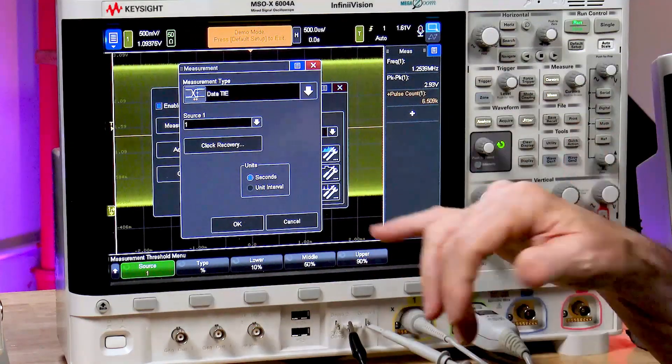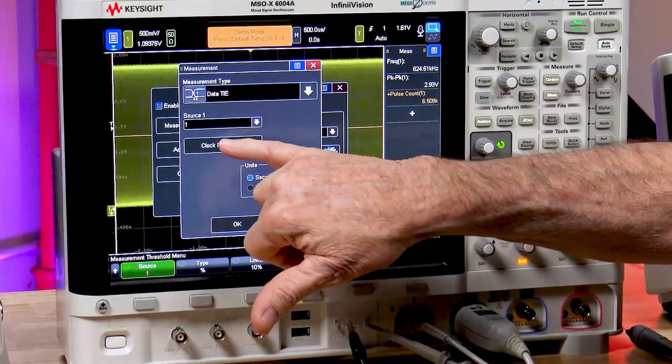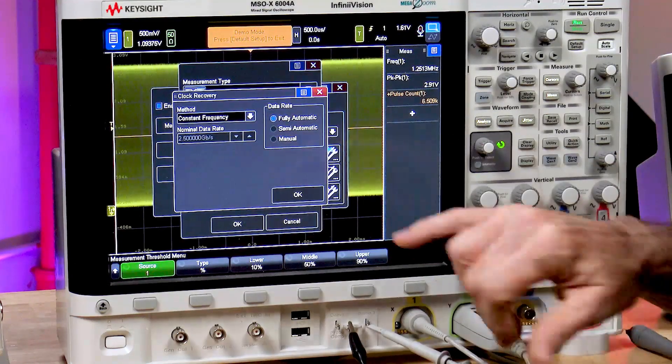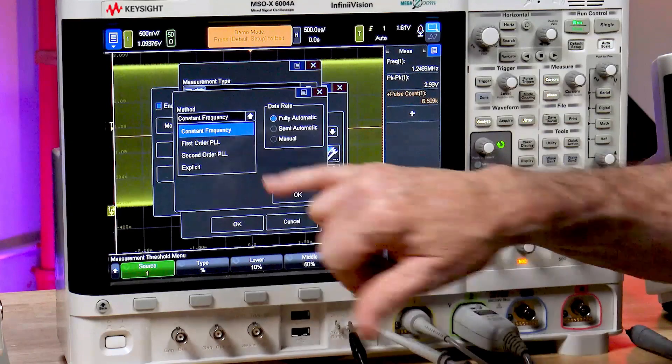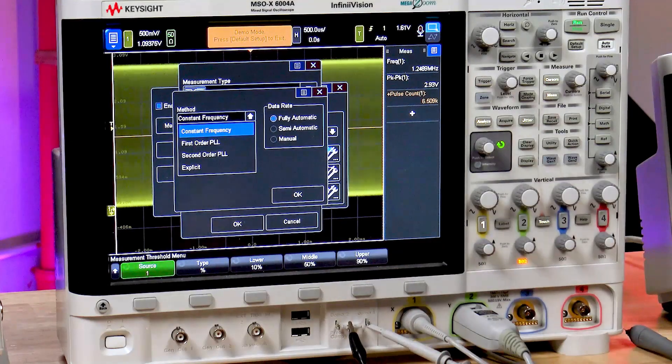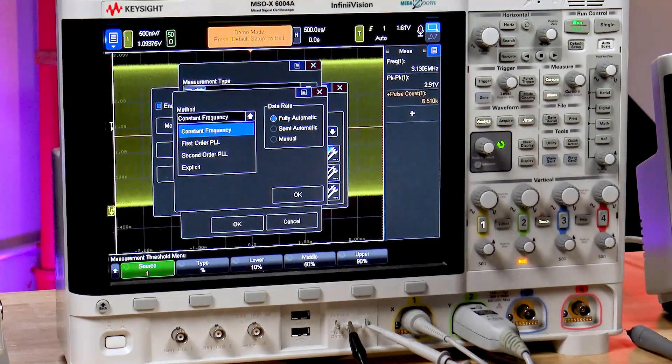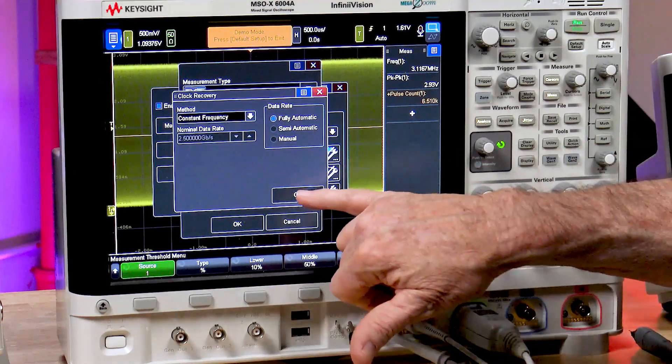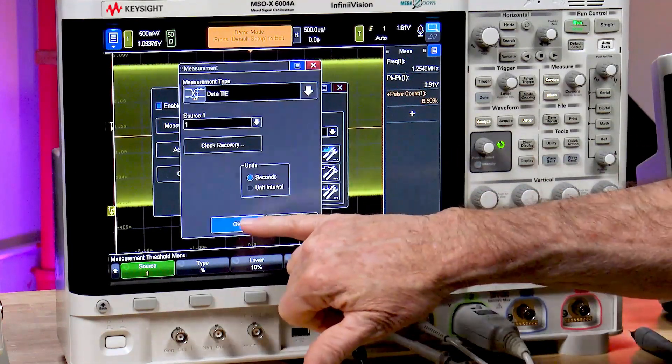Next, it automatically went to the clock recovery menu. We can do this relative to a constant frequency clock or a first order PLL, phase lock loop, or a second order PLL. Let's just do the constant frequency clock. Say okay.